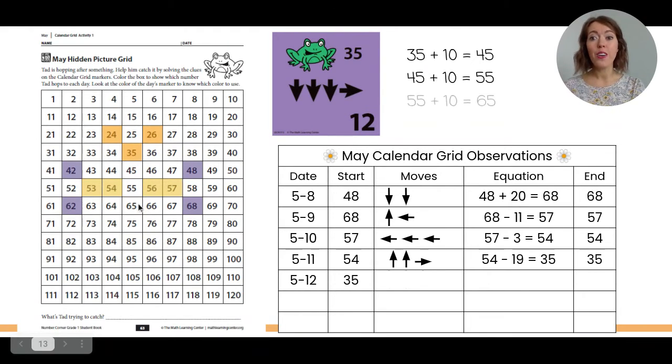One more down, and we land on 65. And then our card says we're going to go over to the right one. So we're going to add one. 65 plus 1 equals 66.